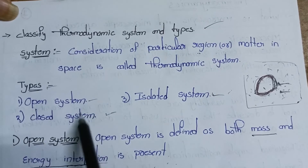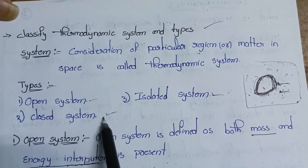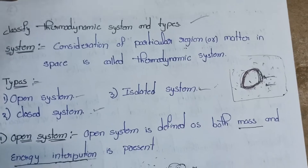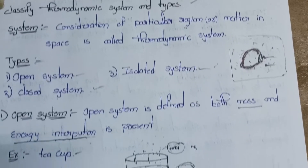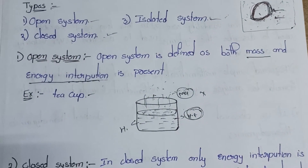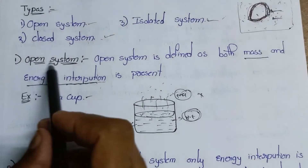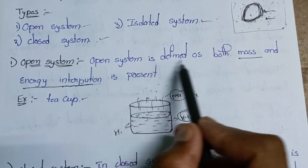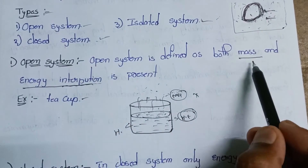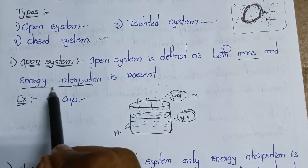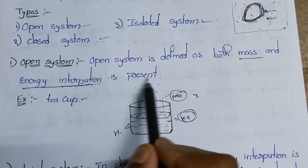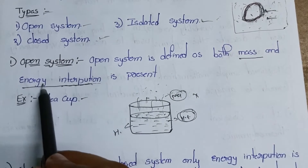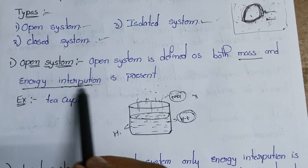The three types are: open system, closed system, and isolated system. An open system is defined as one where both mass and energy interactions are present — meaning both mass and energy transfer can occur.